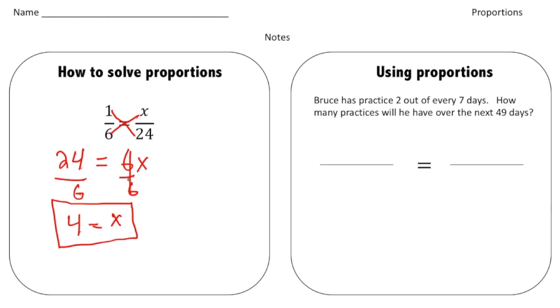Finally, let me show you how we can use proportions in a word problem. So here's the problem: Bruce has practiced two out of every seven days. How many practices will he have over the next 49 days?